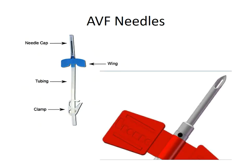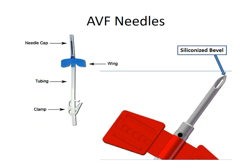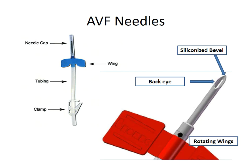The blood circuit starts from the arteriovenous fistula needles. The AV fistula needle has several components: a needle with a siliconized bevel and a back eye, wings, a tube, and a clamp. The needle features rotating wings.